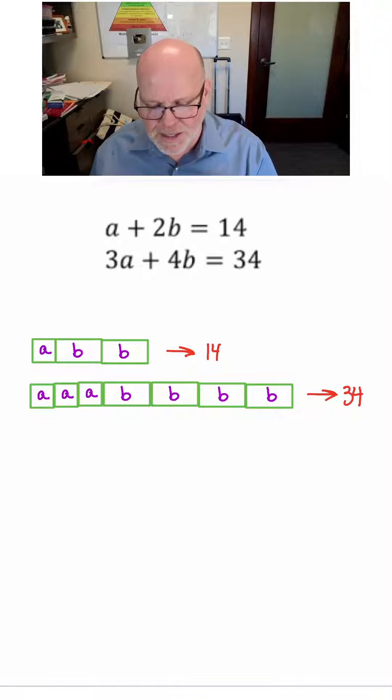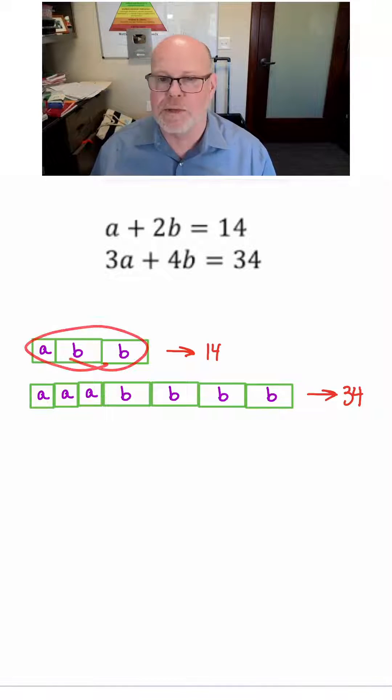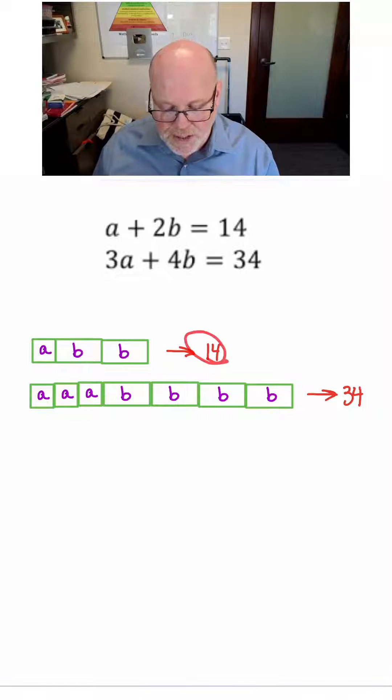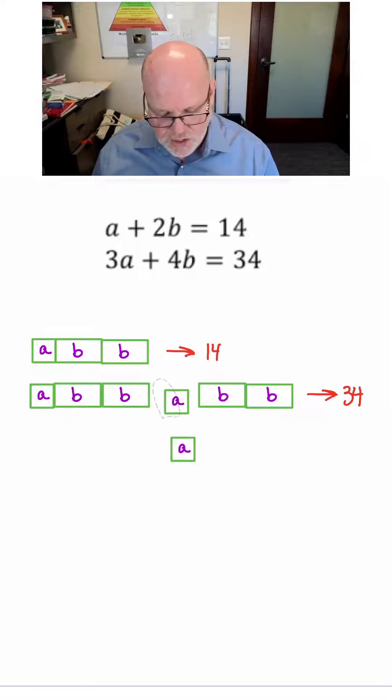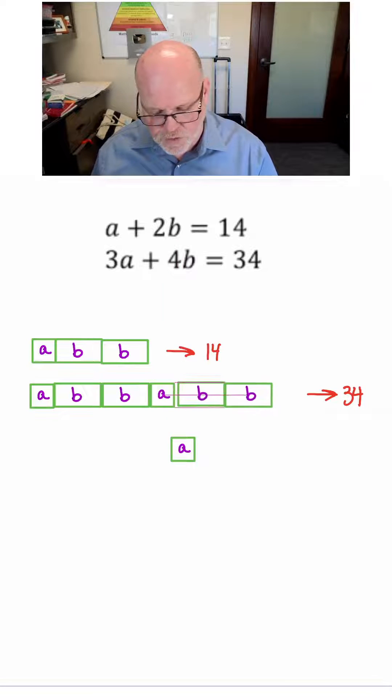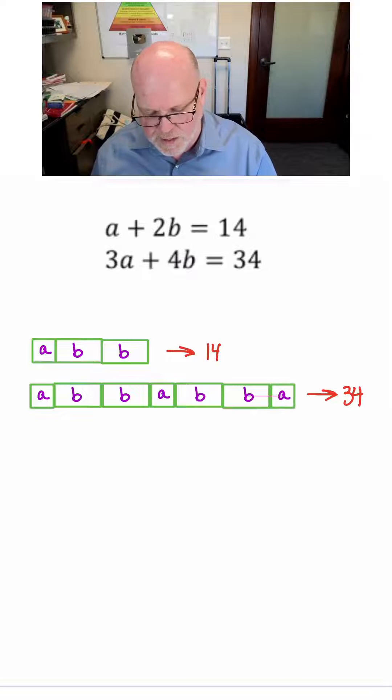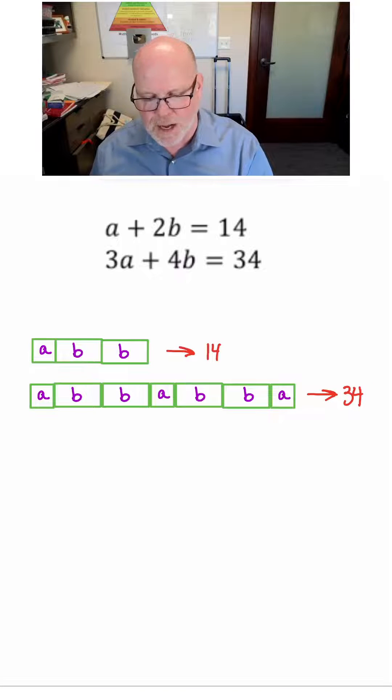And now we know that any time we see an A plus 2B, we can replace it with a 14. So what I'm going to do is do a little bit of rearranging right here. I'm going to kind of scooch this A up there, scooch over these two B's, and move over this A. And we still have 34 down on that bottom equation here.